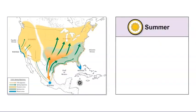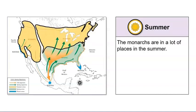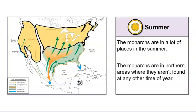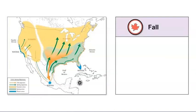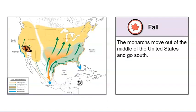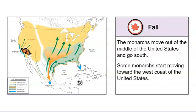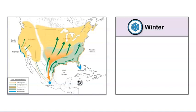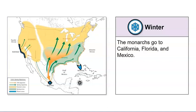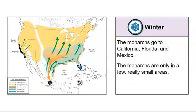Let's look at where monarch butterflies are in the summer. I noticed that the monarchs are in northern areas where they aren't found at any other time of year. What happens with the butterflies in the fall? Look at the orange arrows. The monarchs move out of the middle of the United States and go south. I also noticed some monarchs stay moving toward the west coast during the fall. Finally, I noticed the monarchs go to California, Florida, and Mexico in the winter. In the winter, the monarchs are only in a few really small areas.